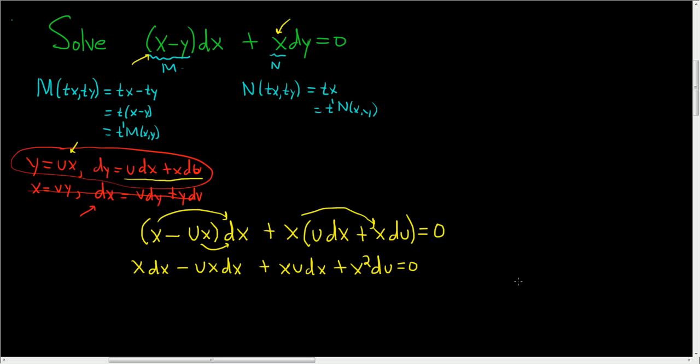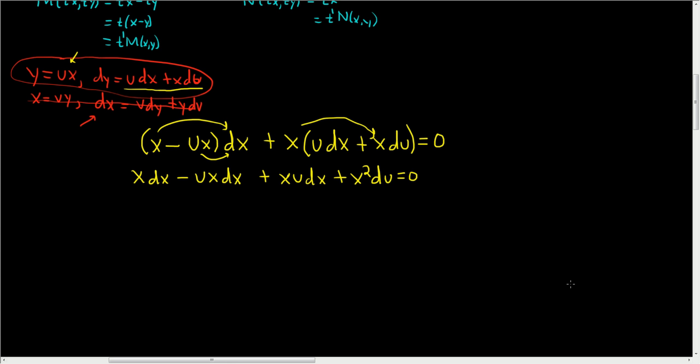Let's see if anything here cancels. Looks like these guys go away. And so we have x dx and x squared du. And this is equal to zero. Our differential equation should be separable.